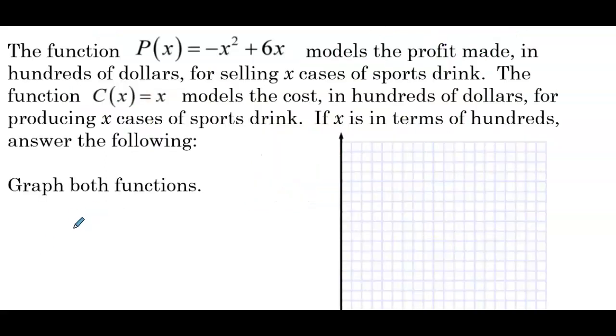Next up, the function P(x) equals negative x squared plus 6x models the profit made in hundreds of dollars for selling x cases of sports drink. The function C(x) equals x models the cost in hundreds of dollars for producing x cases of sports drink. If x is in terms of hundreds, answer the following. So essentially we have a business here and they have a function for their profit and they have a function for their cost. And we're looking to first graph both of those.